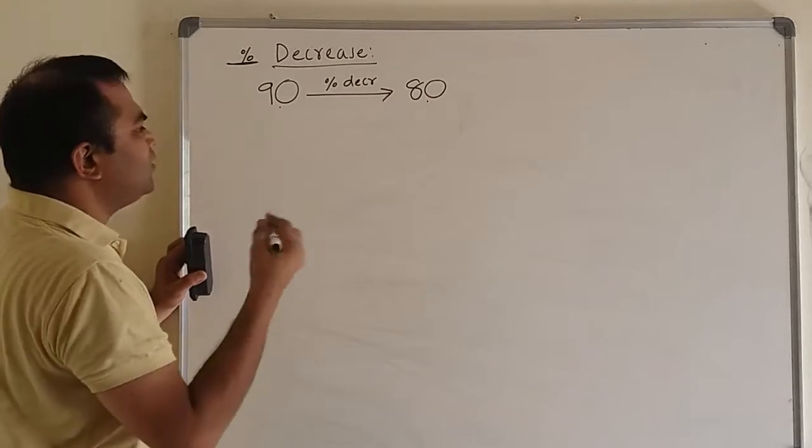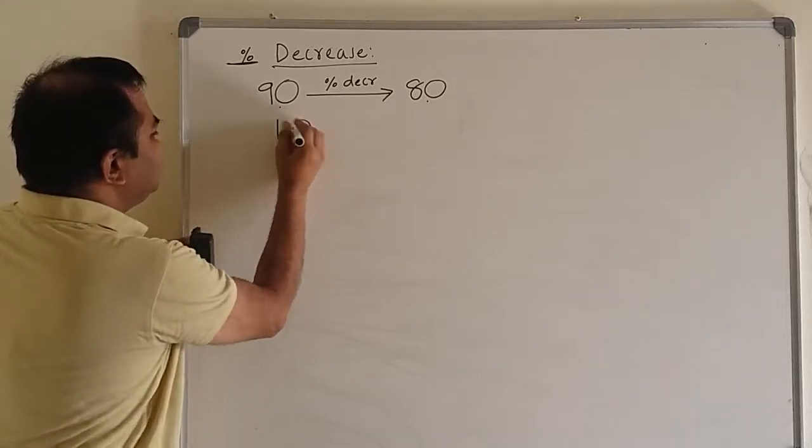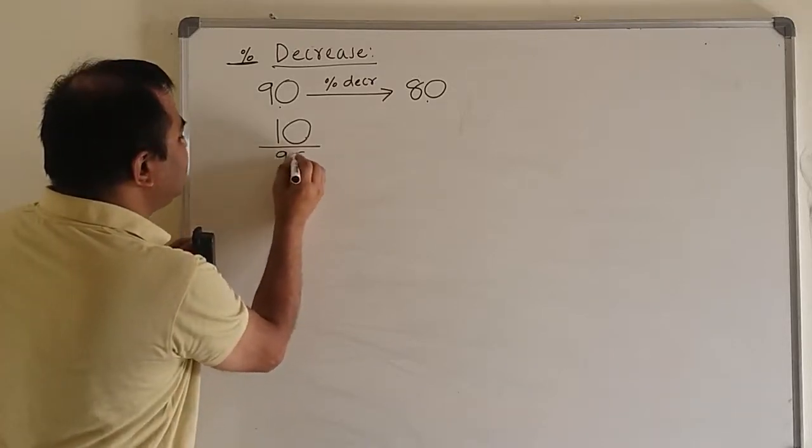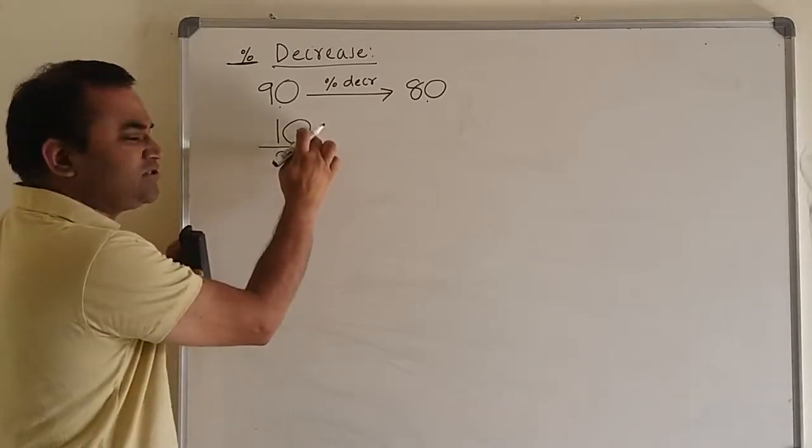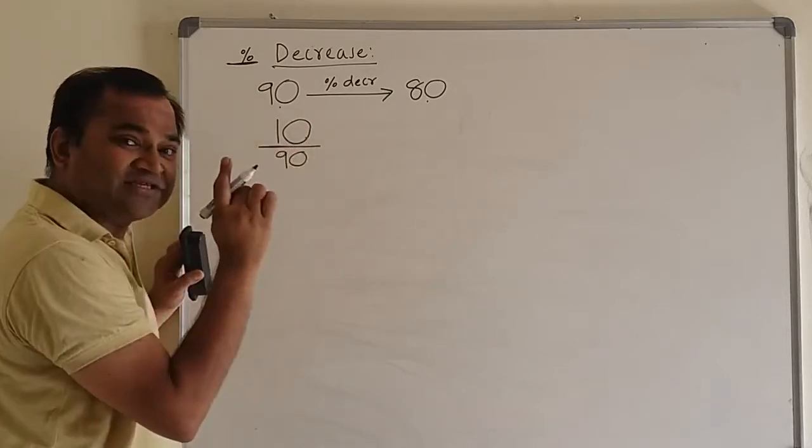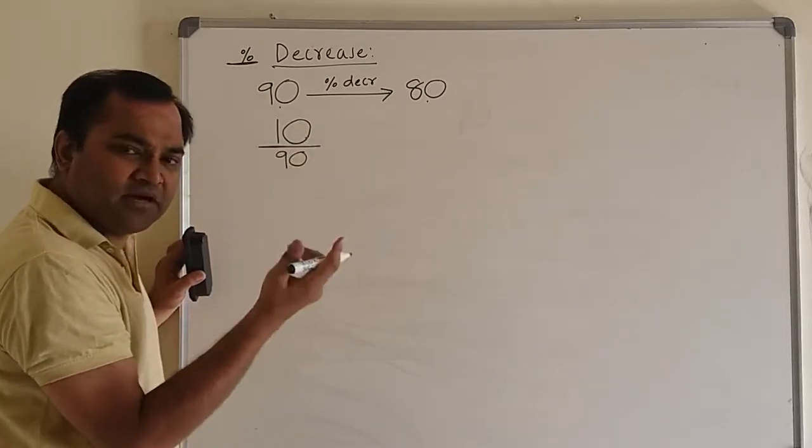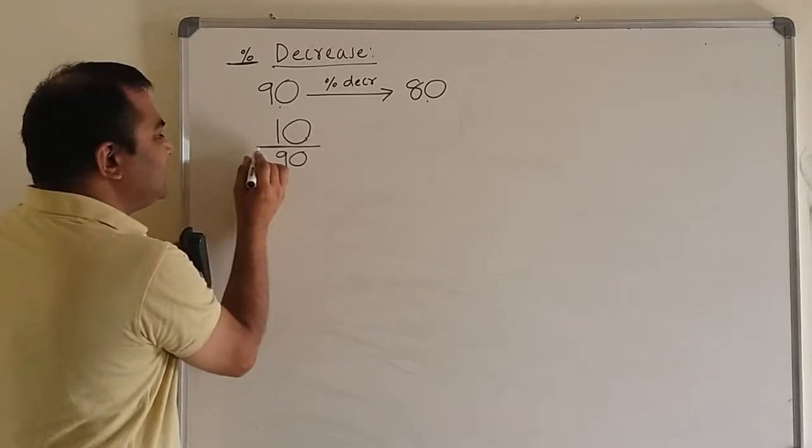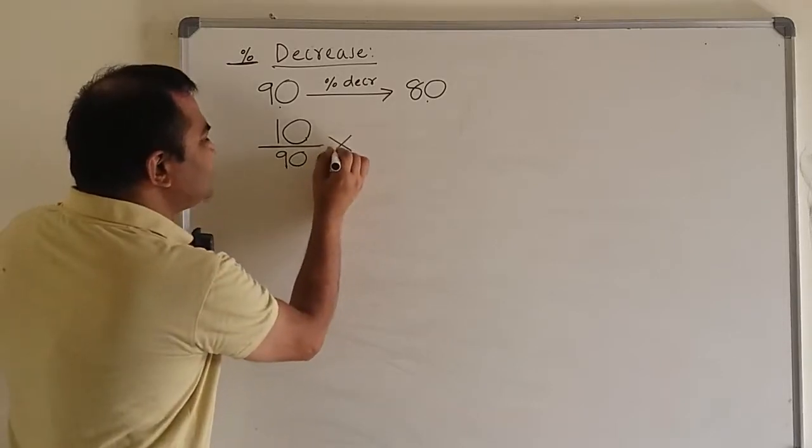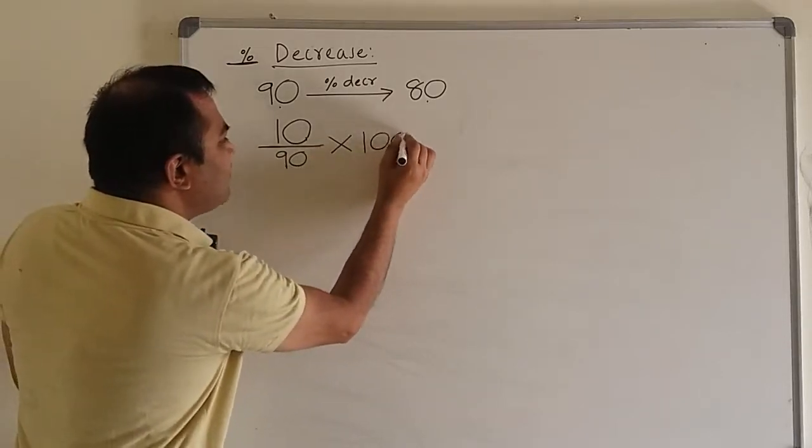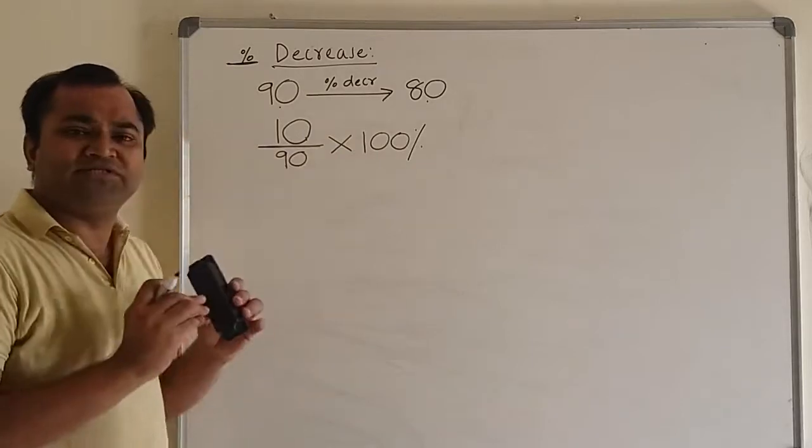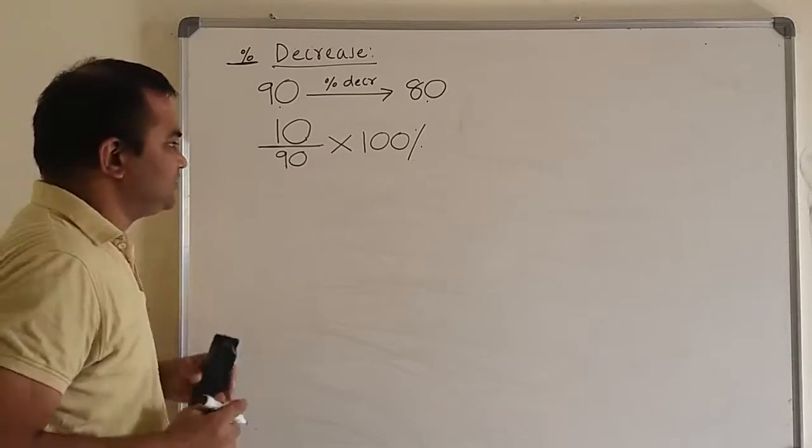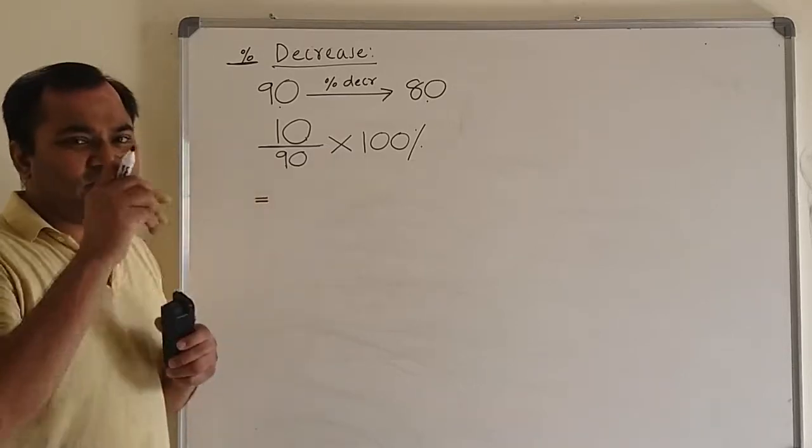You can write like this: there is a 10 decrease on what initial value? On 90. 10 decrease on 90. The fraction bar can be here - the decrease of 10 on 90 is how much decrease per hundred? How much decrease on 100, per hundred, or percent decrease?